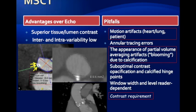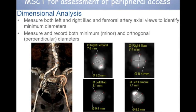CT also shows the peripheral circulation, which is great since 85–90% of TAVI procedures are performed via the femoral route. It shows whether vessels are tortuous, identifies calcium — shown as white areas on the images — and allows measurement of orthogonal diameters to determine whether the delivery sheath will be accommodated by the arteries.